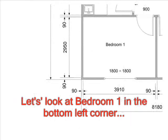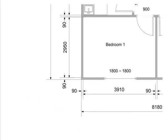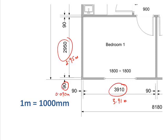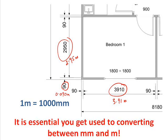First off we'll look at the bedroom in the bottom left corner. What you're going to notice is that all the measurements are in millimeters. As you probably already know, there are a thousand millimeters in one meter. So something like 3910 millimeters on the plan is 3.91 meters, and 490 mils is 0.490 meters. It's really important that you get used to converting between these, especially when it comes to ordering materials.